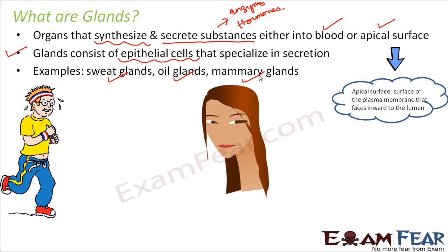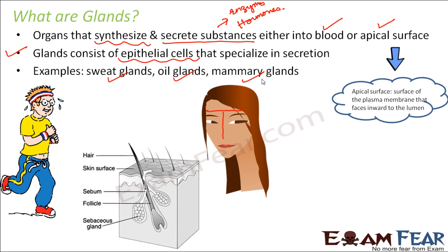Similarly, you have oil glands. Those with oily skin may notice that on the T-region of the face — the forehead and nose — it remains oily most of the time. That oil is the secretion of oil glands present under your skin. Here you can see the sebaceous glands, which are the oil glands. The oil gland is located deep under the skin, but it releases substances that come out onto the skin surface where we can feel them, even though the secretion originates from deep inside.